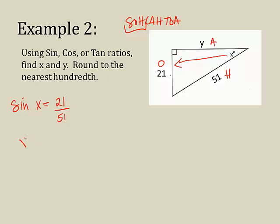And remember, to find x, I'm going to hit this second sine. And it will give me open parentheses. So, I'll put in 21 over 51. And it will give me the angle.